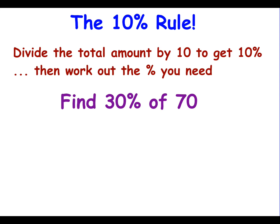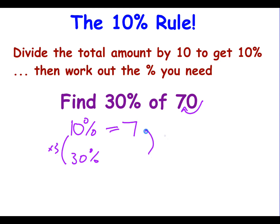Using that understanding of dividing by 10 and 100, there's something called the 10 percent rule. You divide whatever you're trying to find the percentage of by 10, and that gives you 10 percent, then multiply by the number of 10 percents you're after. For example, for 30% of 70, I divide 70 by 10 to get 7, then multiply by 3. So 30% of 70 is 21.